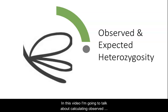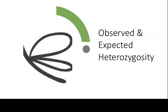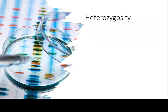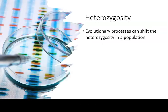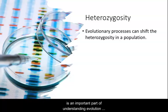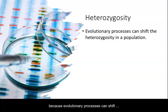In this video I'm going to talk about calculating observed and expected heterozygosity. The measure of heterozygosity in a population is an important part of understanding evolution because evolutionary processes can shift heterozygosity in a population over time.